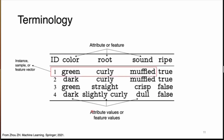When we look at a particular row, excluding the label, that is an instance or a sample. If you think of color, root, and sound as three different axes in space, then this becomes a vector. You can have n-dimensional space, harder to visualize for humans above about three dimensions. The final column — whether it's ripe or not — is called the label. This is critically important in what is called supervised machine learning, because the algorithm needs to associate attribute values with a particular outcome in order to make correct predictions.